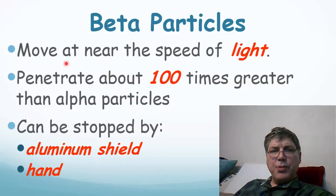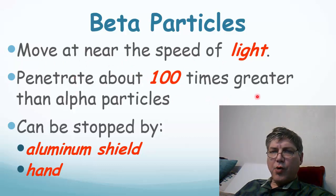Beta particles move near the speed of light. They penetrate about 100 times greater than alpha particles because of that high energy. They can be stopped by a few sheets of aluminum foil or by your hand.